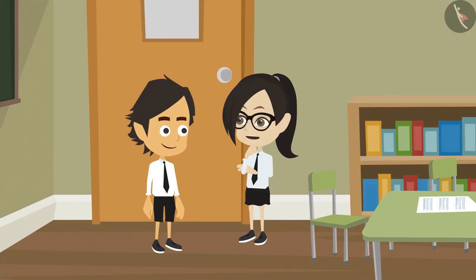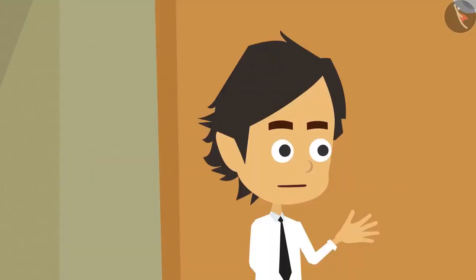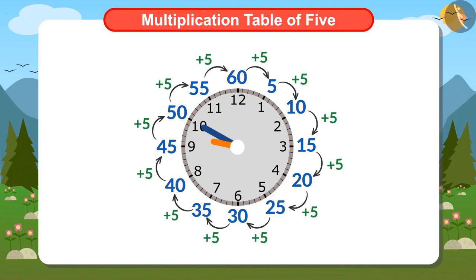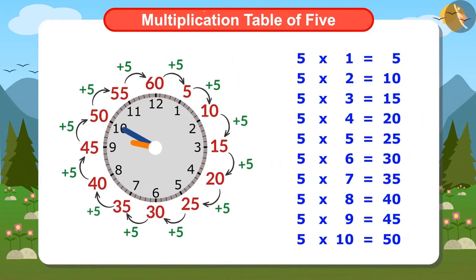What is the relation between counting minutes and the Multiplication Table of 5? There is a direct relation. See, the difference between all these numbers is 5, and the difference between the numbers in the Multiplication Table of 5 is also 5.